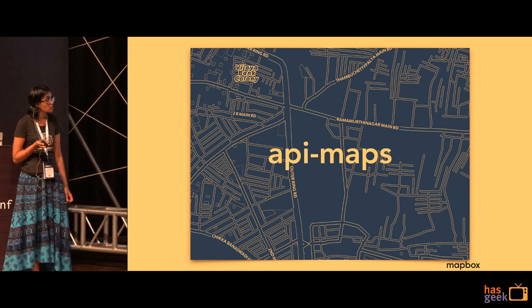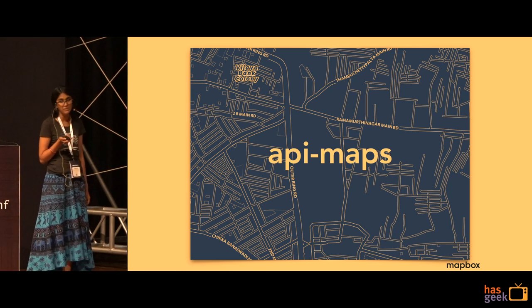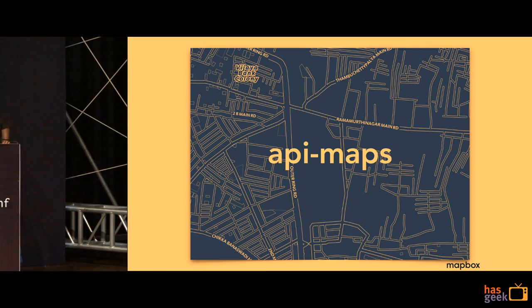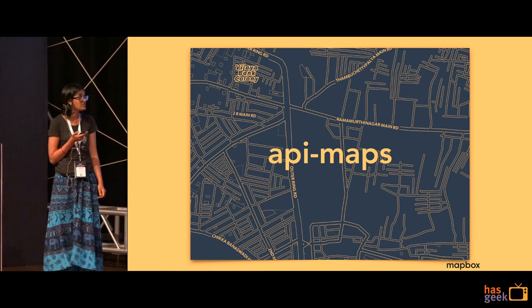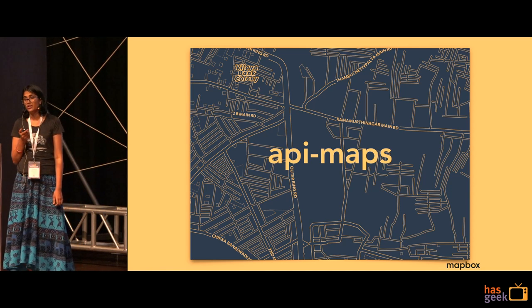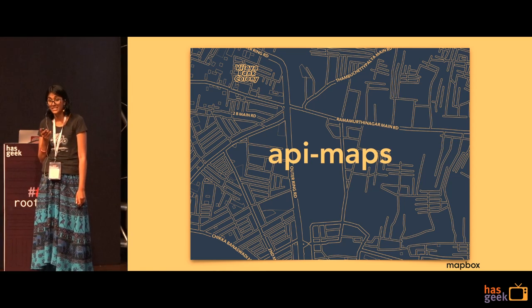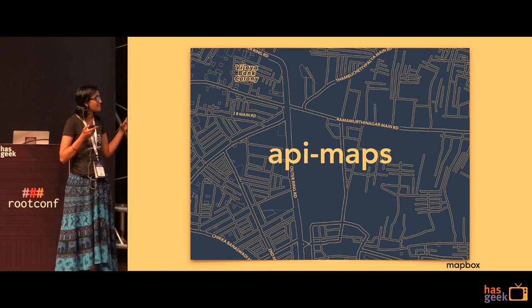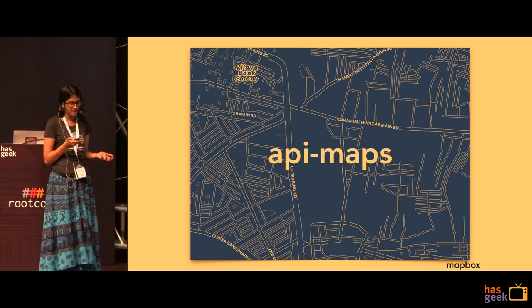We run a host of services at Mapbox, and one of these is our mapping service called API Maps. On any given day, this service serves about 1.5 million requests per minute, served across six origin regions. These servers that serve these requests are housed in auto-scaling groups, which is an AWS concept.